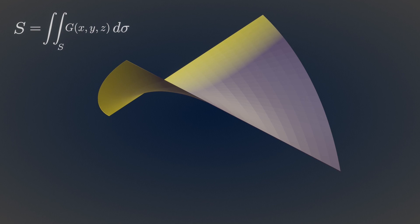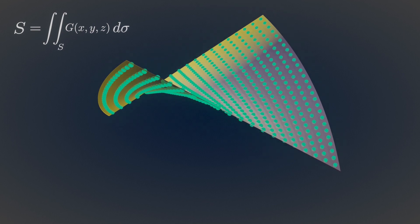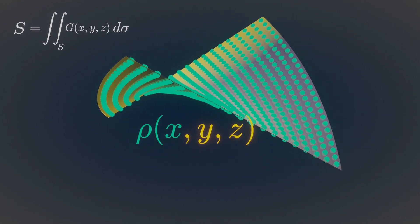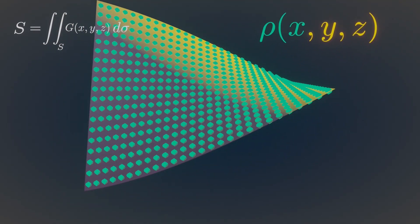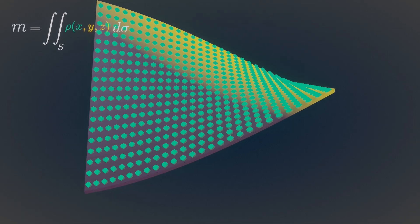For example, you might want to compute mass at each point on the surface. And if the mass per unit area on each point of a surface is given by this equation, then evaluating this surface integral gives the total mass of this object.